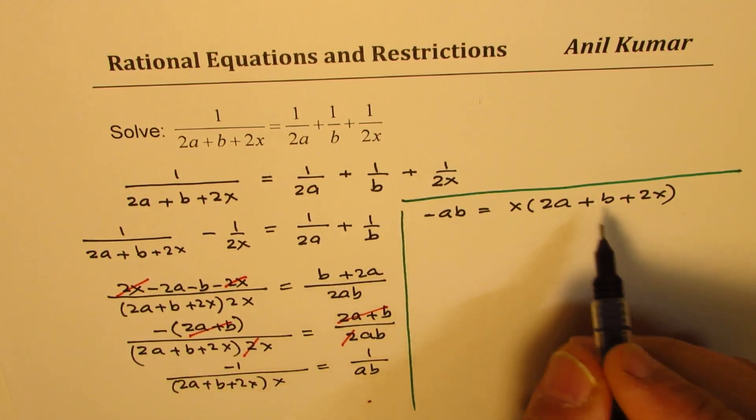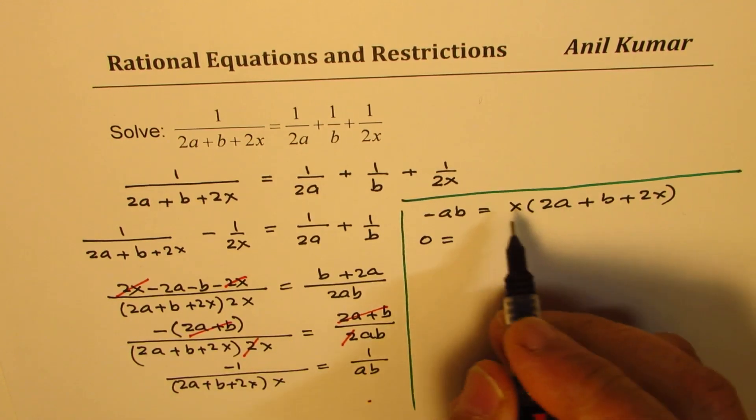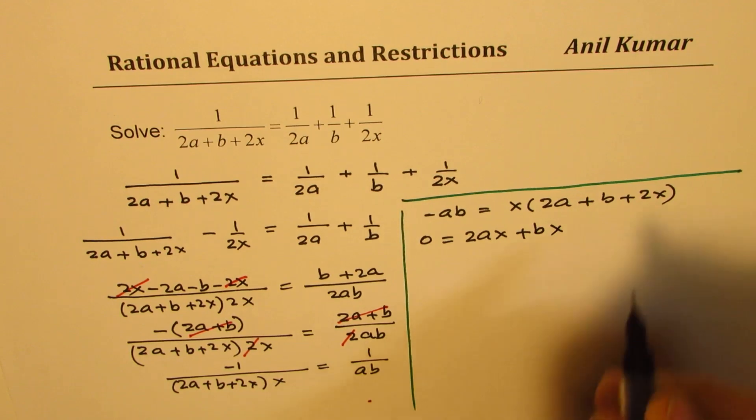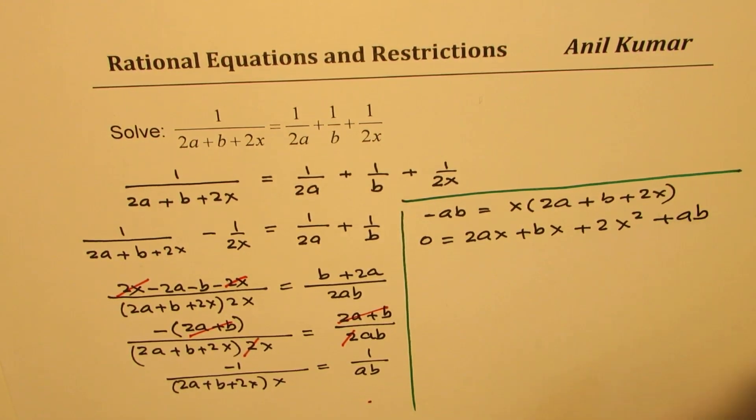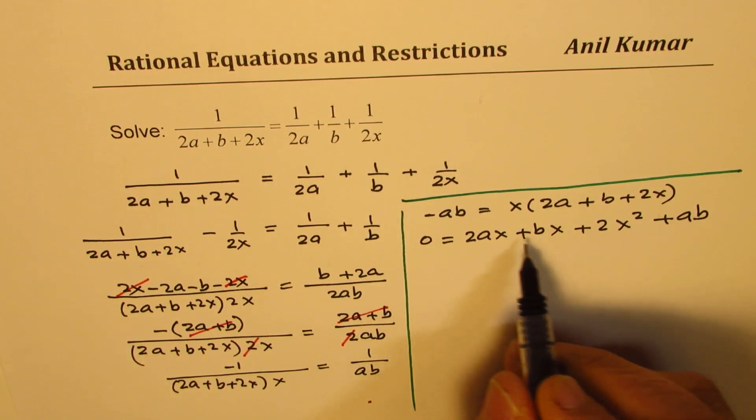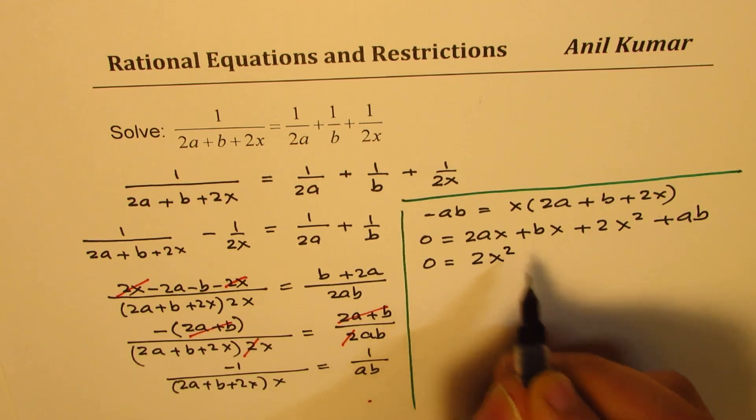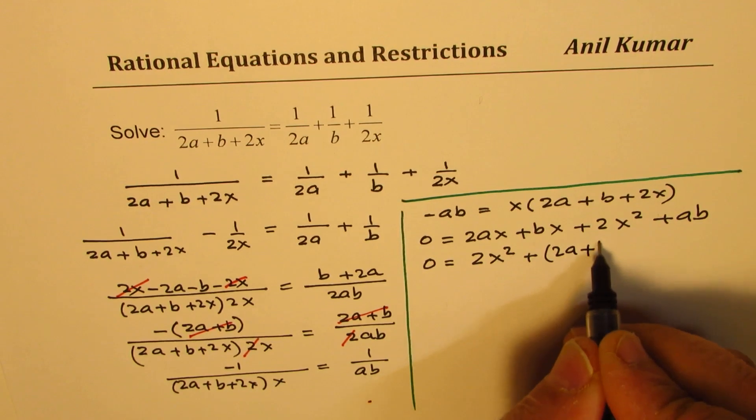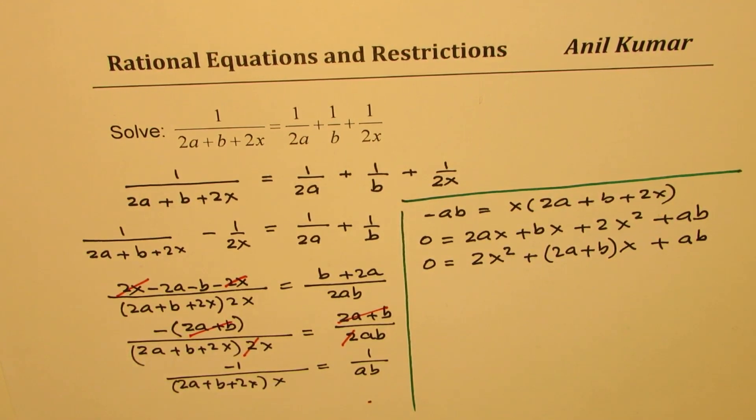So we get minus ab equals to x times 2a plus b plus 2x. Now we can bring all the terms together. 0 equals to, open this bracket, we get 2ax plus bx plus 2x squared and plus ab. So we see that this is a quadratic equation where leading term is 2x squared. Coefficients of x are 2a plus b and a constant term is ab.